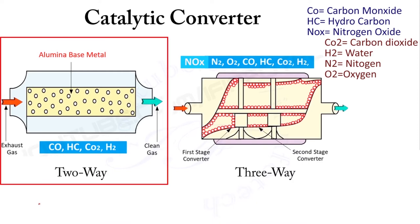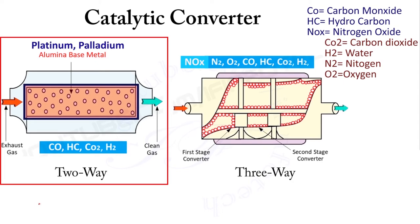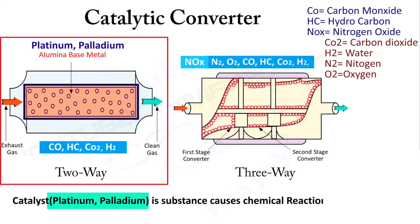Inside a catalytic converter there is a honeycomb structure of metal which is coated with an alumina base material, and a second coating of precious metals like platinum and palladium. This second coating serves as a catalyst.